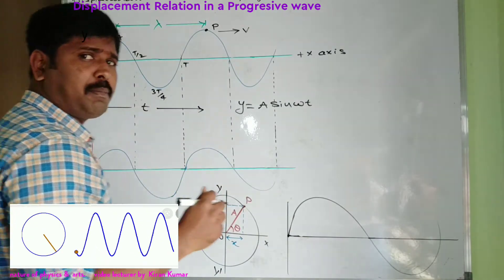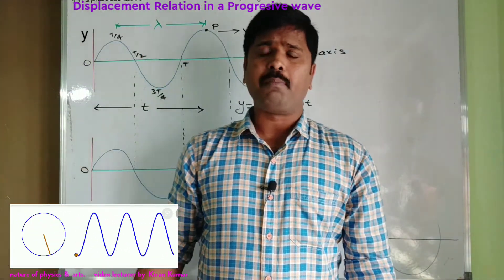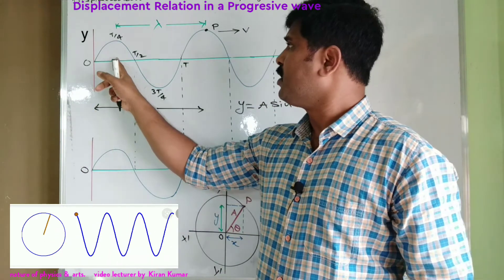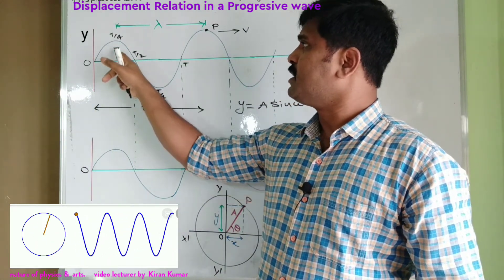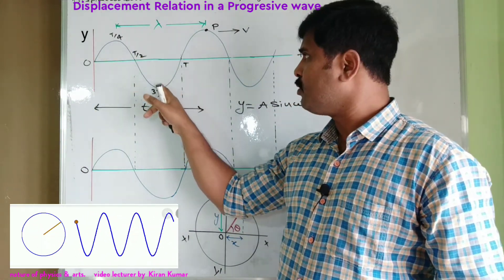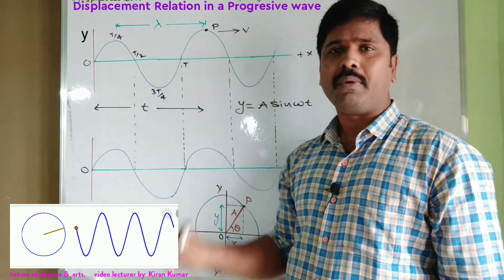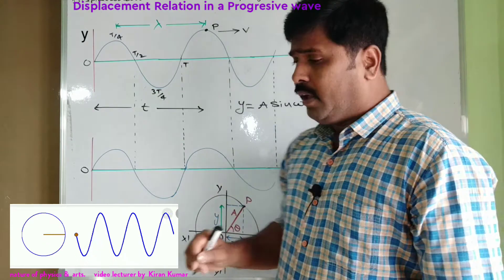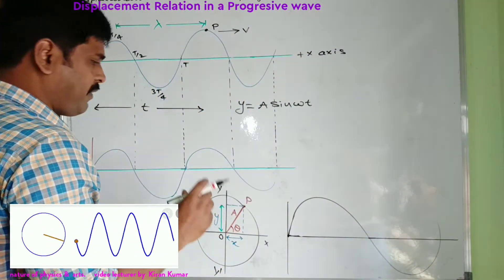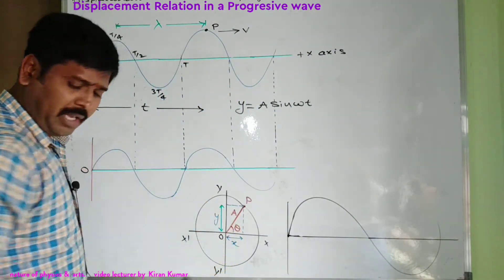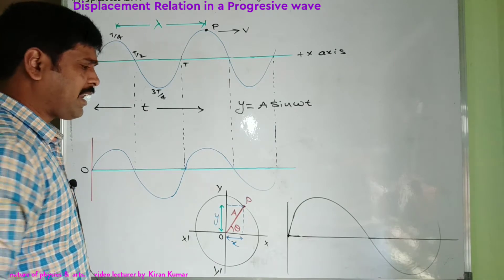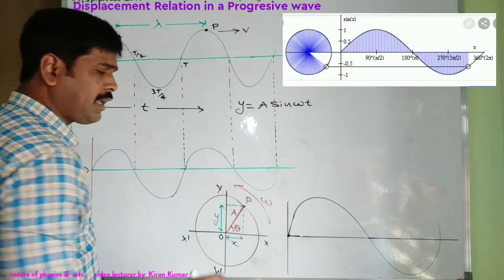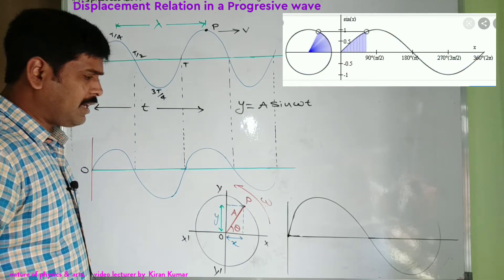Here, a is the amplitude of the wave — the maximum displacement of the particle from the mean position. This is the positive amplitude and this is the negative amplitude. Then, considering the reference circle: the particle is moving along the circumference of the circle with angular velocity omega in the anticlockwise direction.